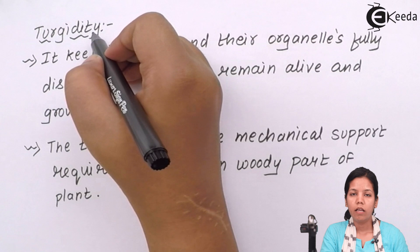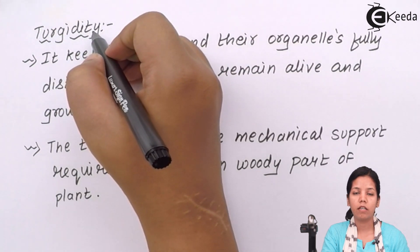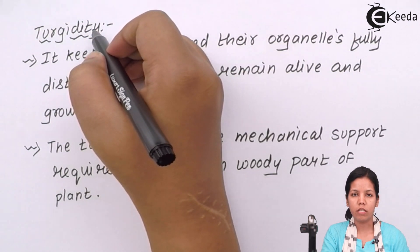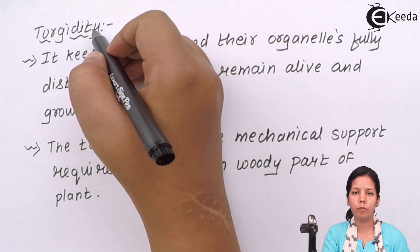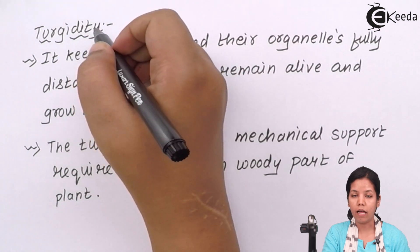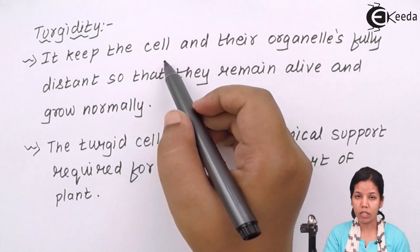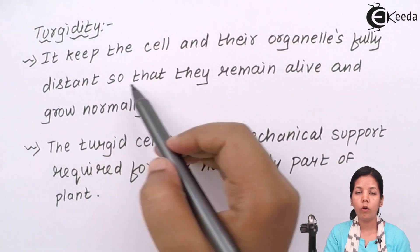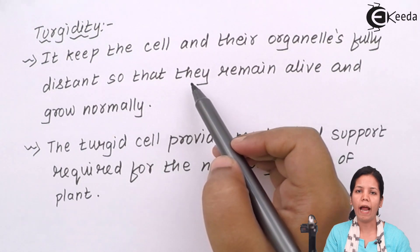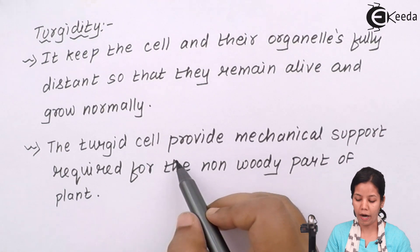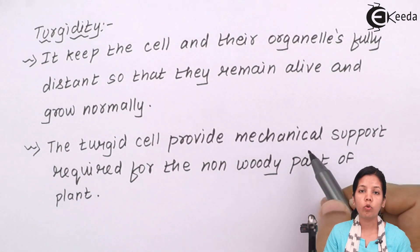Turgidity basically helps in certain aspects. Turgidity is nothing but the presence of solute particles or various nutrients — that is, salts and water — which are present inside the cell. Turgidity plays an important role during ionic balance. Apart from that, turgor pressure helps to keep cells at distinct places, due to which all cells can grow at a normal distance. Besides this, turgidity provides mechanical support to the non-woody part.